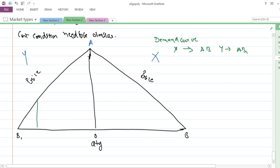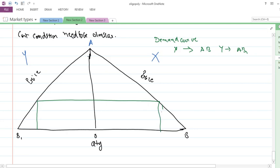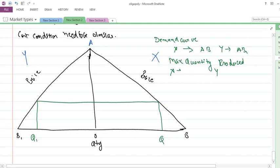The maximum possible quantity that can be produced by each of these firms, let's assume that it is here. This is the maximum possible quantity that each of the firm can be producing in a given situation. Let's give it names of Q and Q1. So the max quantity produced by X is OQ and by Y is OQ1.